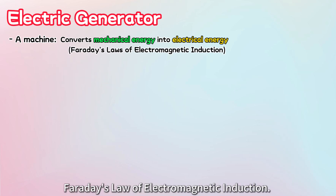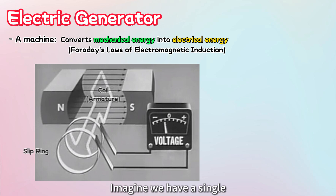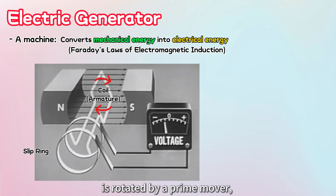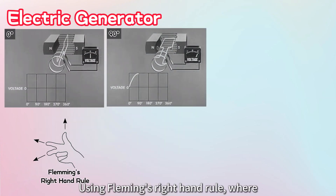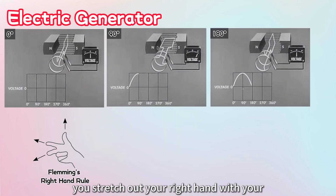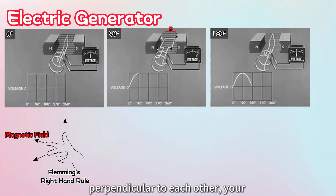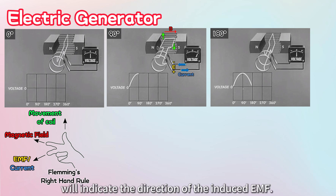Generators work based on Faraday's law of electromagnetic induction. Imagine we have a single coil of wire, called an armature, placed between the north and south poles of a magnet. When this coil is rotated by a prime mover, it cuts through the magnetic field, inducing an electromotive force, or EMF, in the conductor. Using Fleming's right-hand rule, where you stretch out your right hand with your thumb, index finger, and middle finger perpendicular to each other — your index finger points in the direction of the magnetic field, your thumb shows the movement of the coil, and your middle finger indicates the direction of the induced EMF.